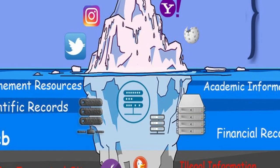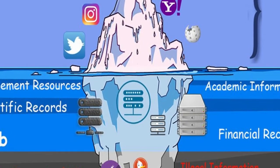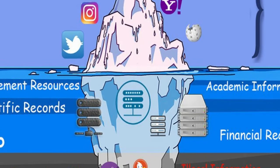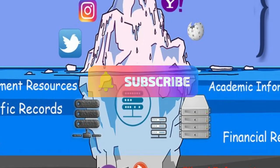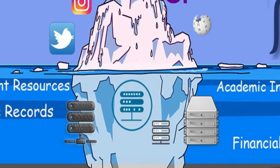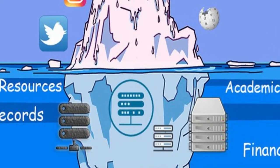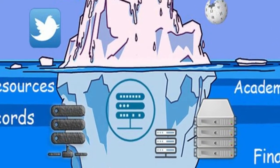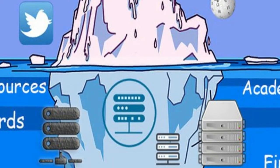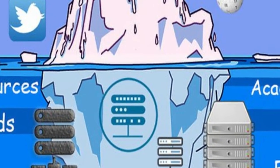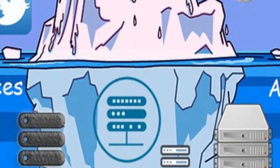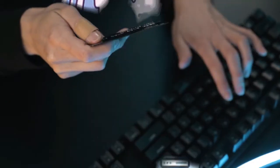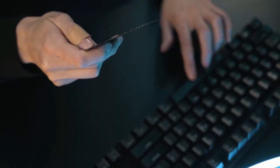Deep Web: It consists of private data like email accounts, cloud storage, employee records, subscription content, etc. This part of the web requires authentication and permissions to access the data. It consists of 90% of the internet. Accessible through traditional web browsers like Chrome, Firefox, etc., but cannot be indexed by the search engines.